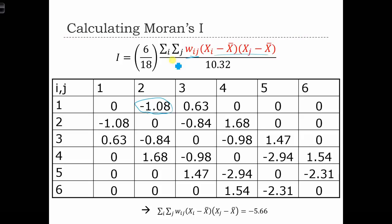And now we have to sum them all up. And when we sum them all up, we find that the sum of the cross product terms is minus 5.66. Now what does that mean? It means that more often than not, when x_i and x_j are neighbors, x_i and x_j aren't similar values. So more often than not, when x_i is above the mean, x_j is below the mean, and we end up with negative cross product terms.